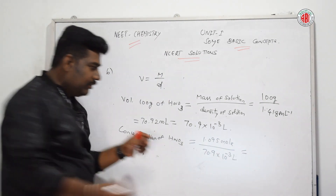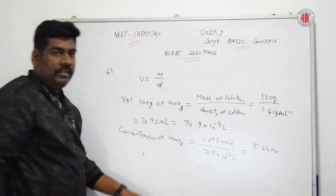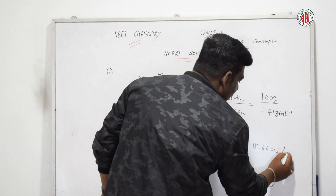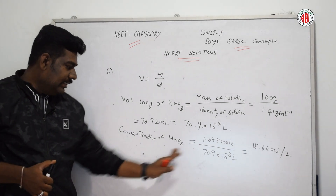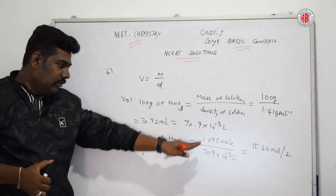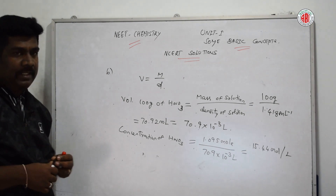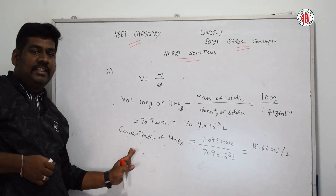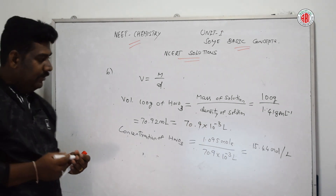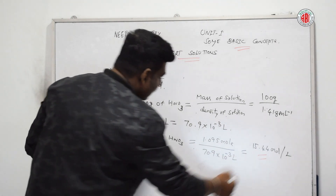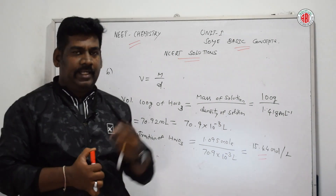Simplifying, we get approximately 15.44 moles per liter. Concentration of HNO₃ = moles ÷ volume = 15.44 moles per liter. This is the concentration of nitric acid. By this way we can solve this problem. Let us go to the next question.